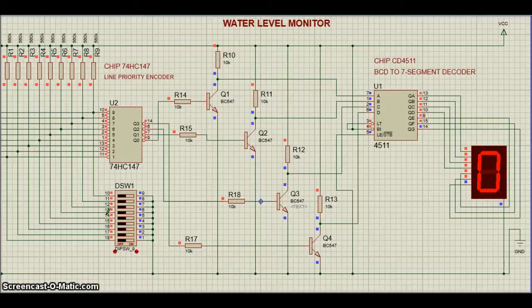Similarly, when the water level reaches position one, the encoder sends binary 1000 to the decoder, which makes the display show one. And when the water level reaches position eight, the display shows eight.